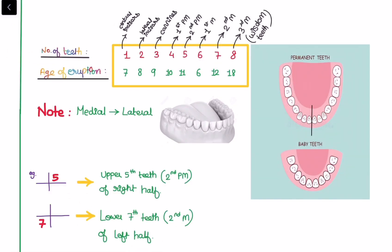Now in medical abbreviations we will be studying this kind of plus sign with the number denoted on it. For example, here the 5 is written on the upper half. What does that mean? It means the upper 5th tooth, that is second premolar of the right half, needs to be checked for any disorder or pain or maybe anything else. And the second one, here the 7 is written, that means the lower 7th tooth, that is second molar of the left half, needs to be checked.